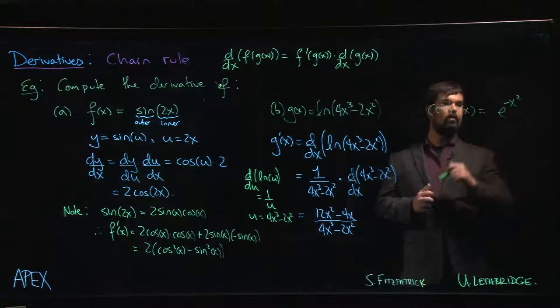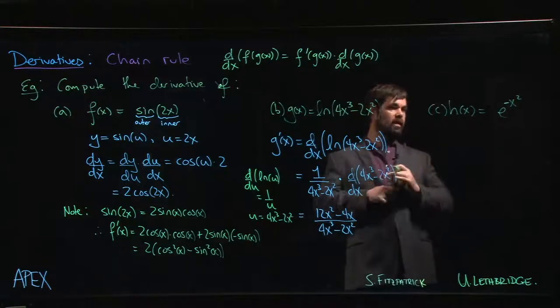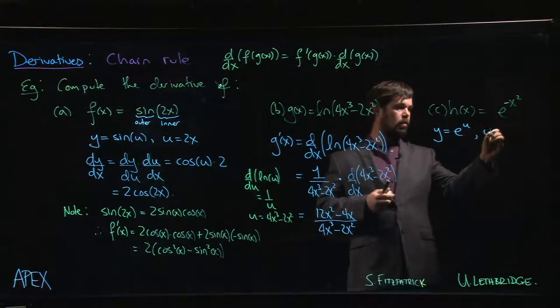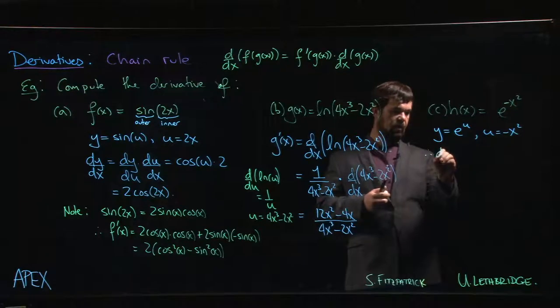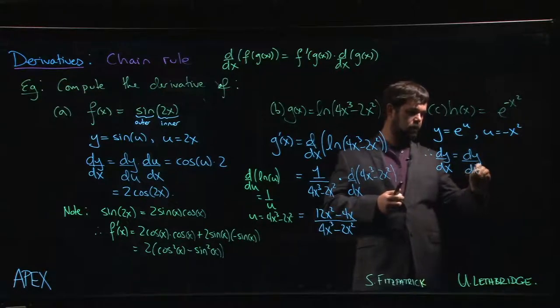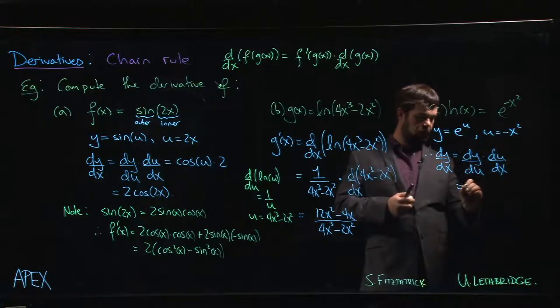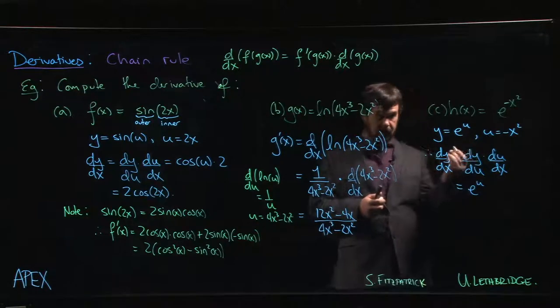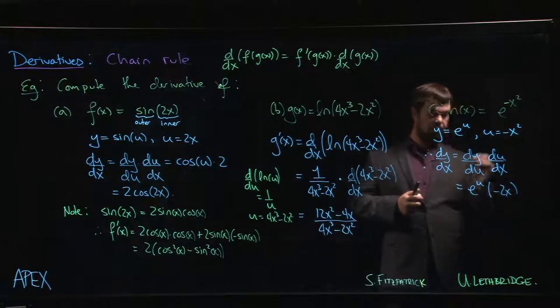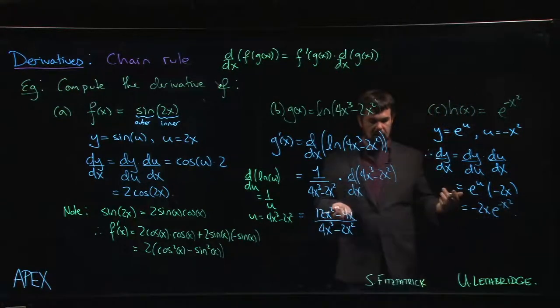Okay. One more. h of x is e to the minus x squared. So again, if we want to, we could think of this as either y is equal to e to the u where u is equal to minus x squared. And that means that dy dx is dy du times du dx, which is, well, the derivative of e to the u is e to the u if we're differentiating with respect to u. du dx is minus 2x. And then we get everything back in terms of x. So we get minus 2x e to the minus x squared. All right. We can do it that way.